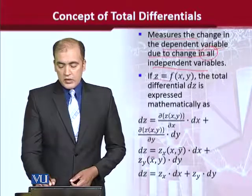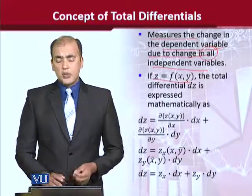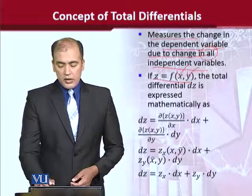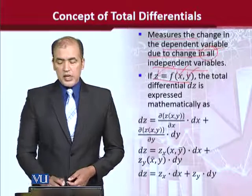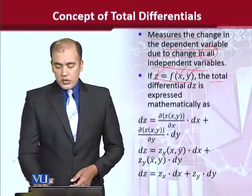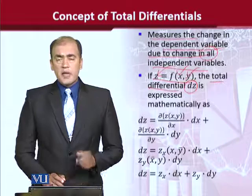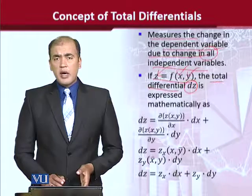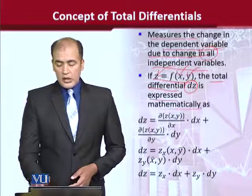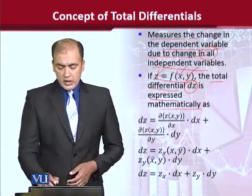Let us assume a functional form in which there are three variables. There are two independent variables, x and y, and z is the dependent variable. If we have the total differential, it will be denoted by dz, and we will write it in a certain formula which we have seen.